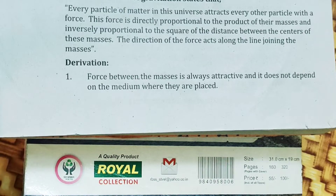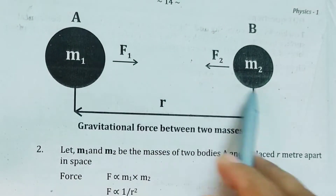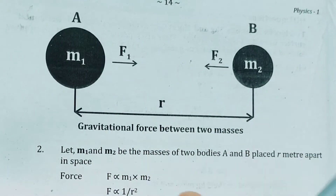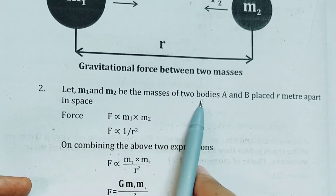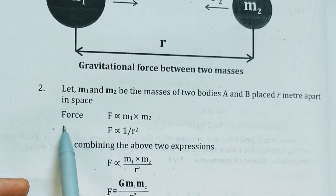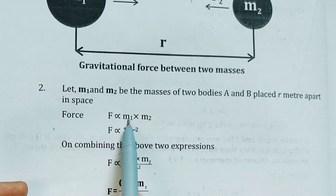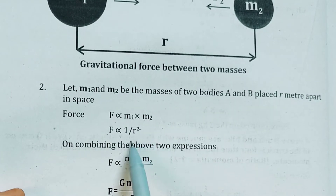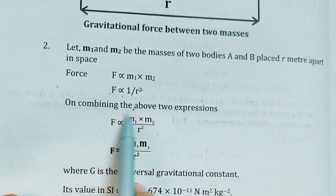Look at this diagram. M1 and M2 are the two masses; AB represents the force — Force 1 and Force 2 — and the distance between them is R. So now the two masses have gravitational interaction. M1 and M2 are the masses of two bodies; the distance AB is given. Force is directly proportional to the product of the masses M1 and M2, and inversely proportional to the square of the distance R between them.